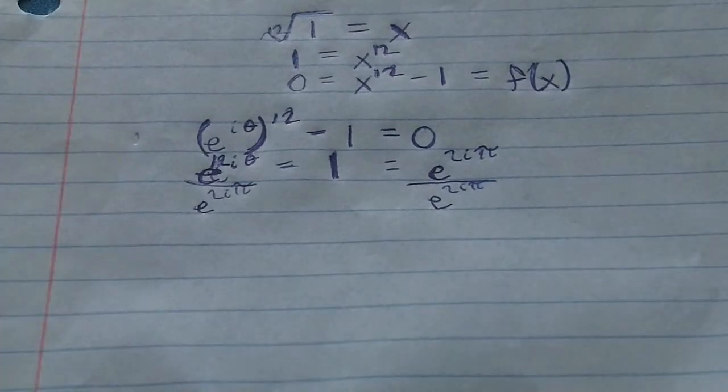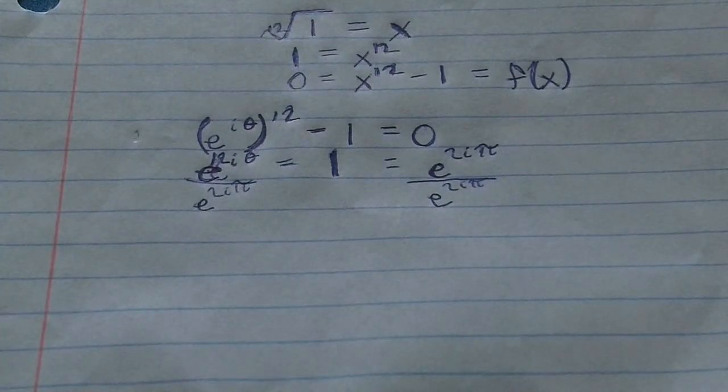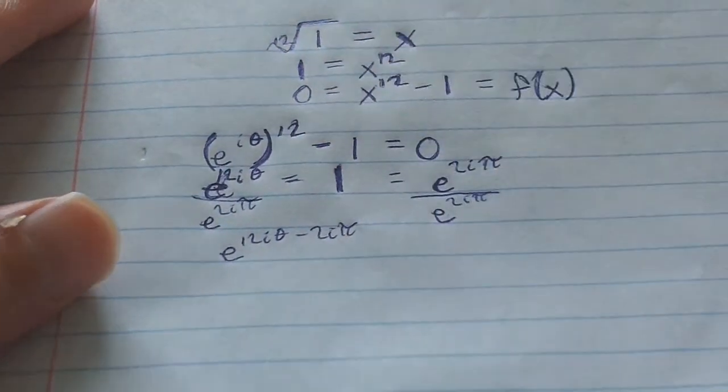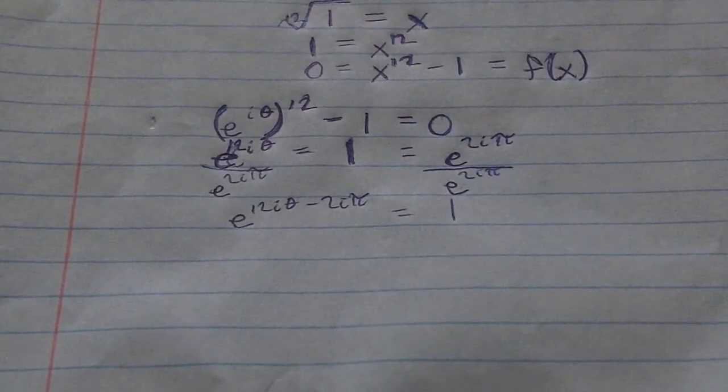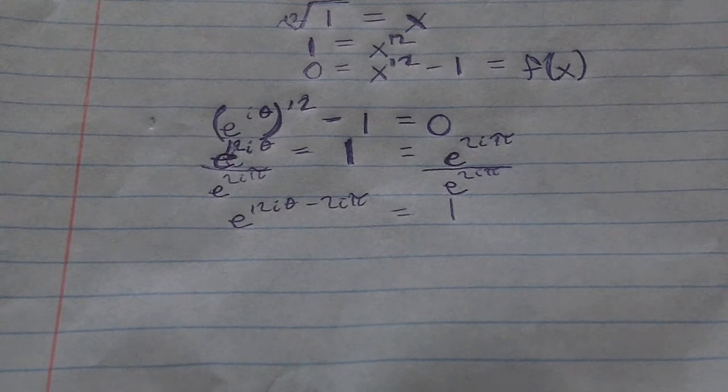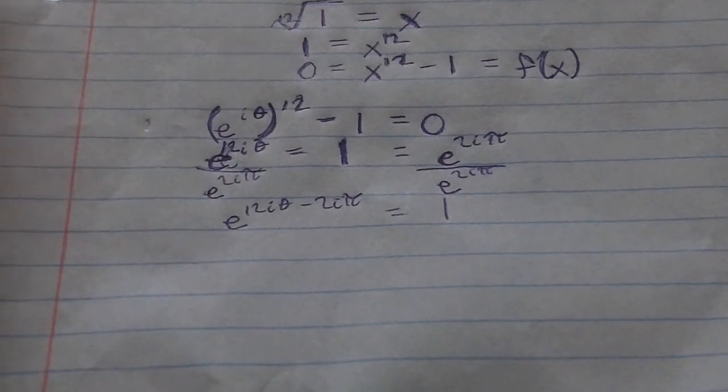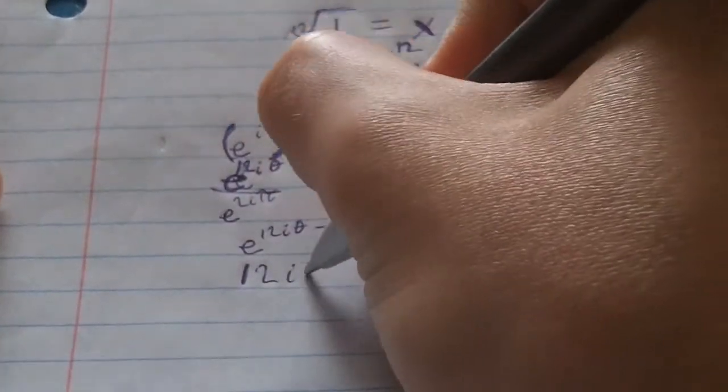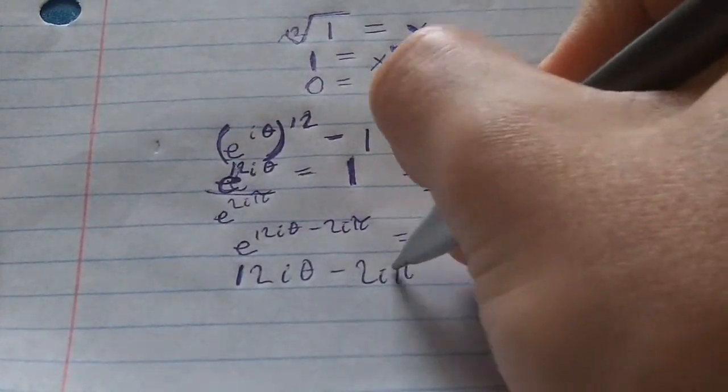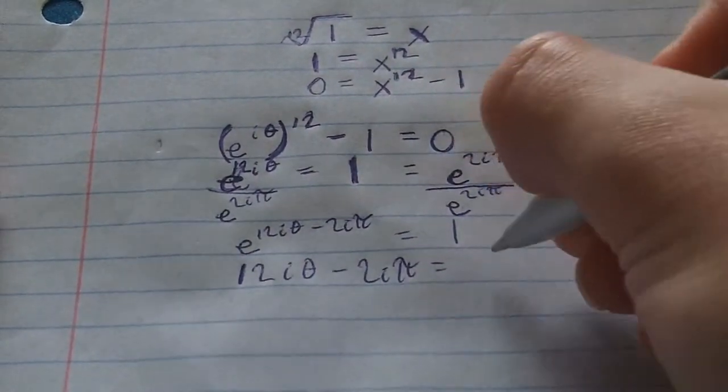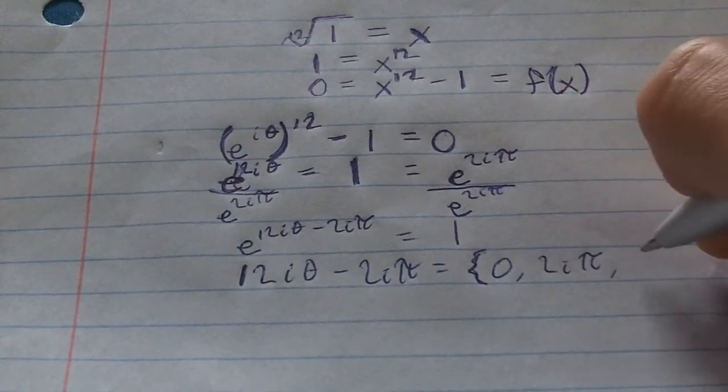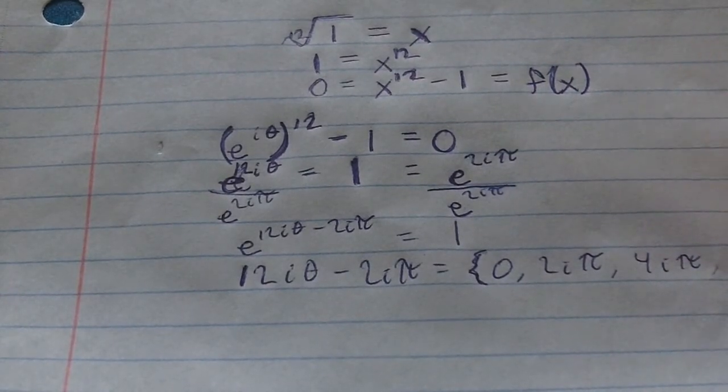And bear in mind, we're trying to kind of solve for theta in this case. And we want to get a set of numbers, if possible. So we're basically getting that e to the twelfth i theta minus twelfth i pi equals one. So with this particular approach to finding the value of theta, it's a little complicated. I'm going to continue by asserting that twelve i theta minus two i pi equals, and I'm saying that it can be zero, or two i pi, or four i pi, or six i pi, etc.